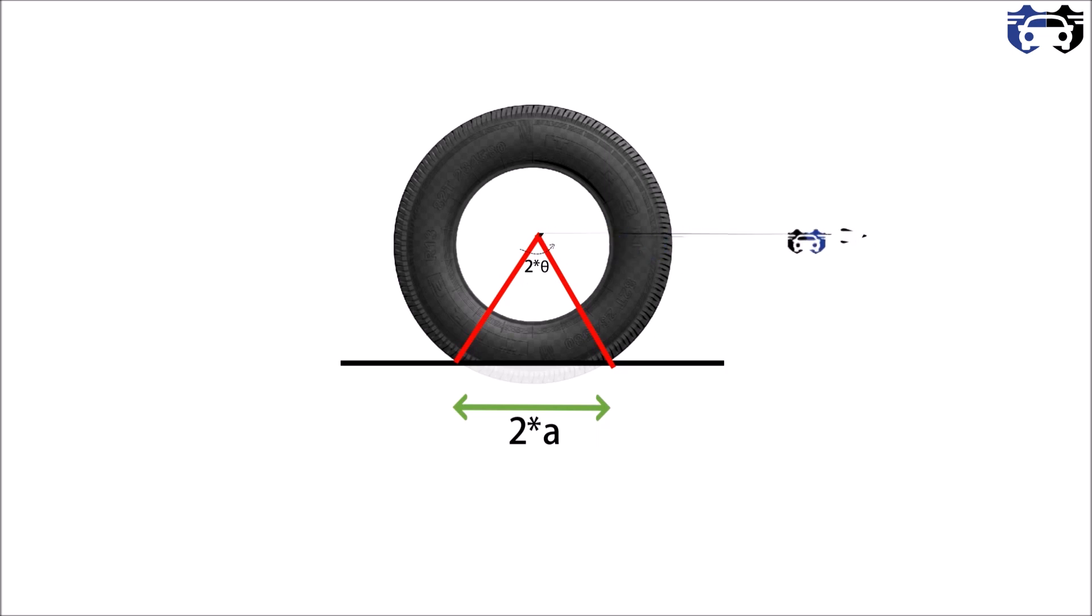The tire is going forward with the forward velocity of v and it is rotating with the angular velocity of omega in the clockwise direction. When the car is moving, the tires are loaded.